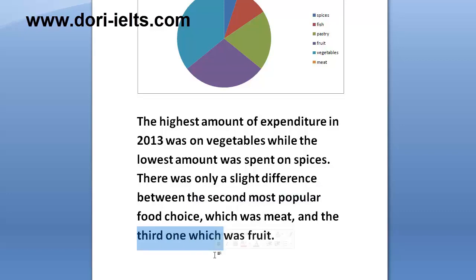So we have four points altogether. Of course, it depends on the task which points you will choose to refer to in your overview. But overall, if you remember that you should find four points and make comparisons between at least two of them, you should be fine. Another important thing is to use connectors such as 'while' when you make your comparisons.